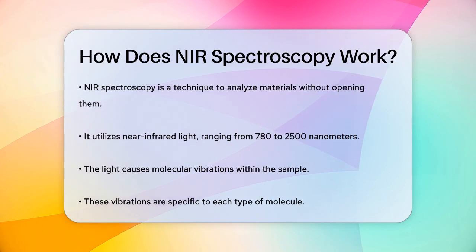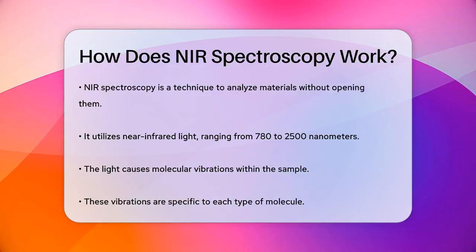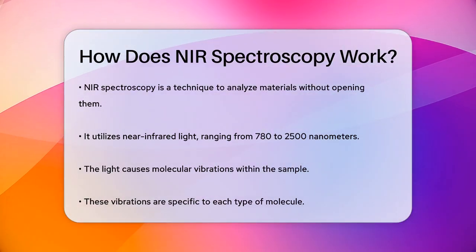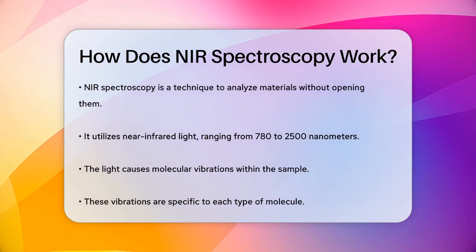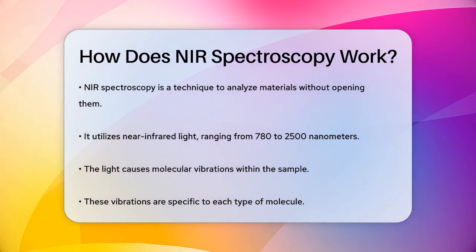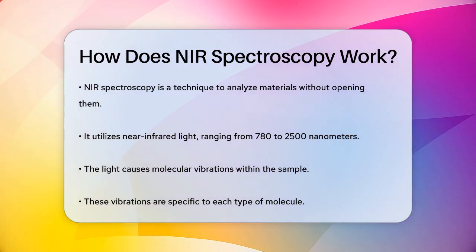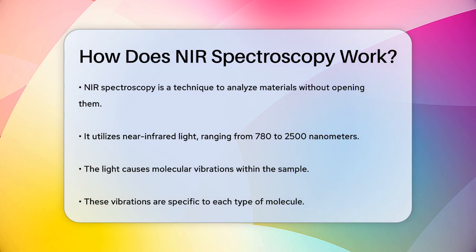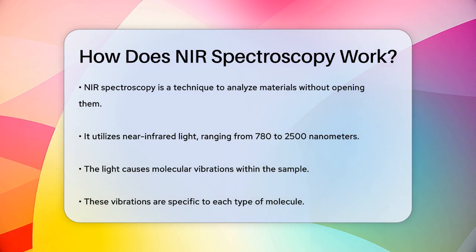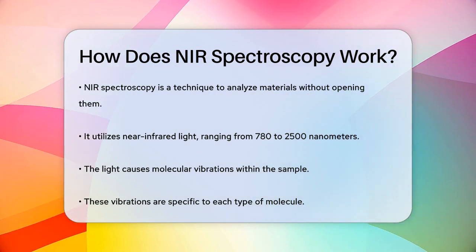NIR spectroscopy uses a specific range of light called near-infrared light, which is between 780 and 2500 nanometers. This range is right next to the visible light that we can see.